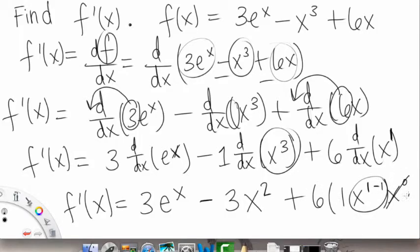So x to the 0, that's just going to be a 1, right? So this will just be 6 times 1, this last term here. So on the next slide, I'll write down what our final answer for f prime of x is.